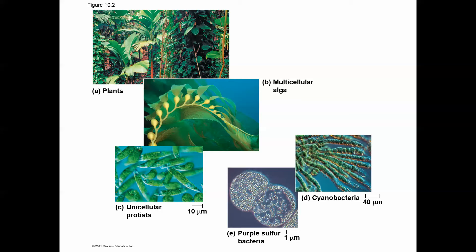The organisms involved in photosynthesis include plants, algae, and single-celled eukaryotes. But it also includes bacteria — some bacteria are also photosynthetic and able to undergo this process. So several eukaryotes do this: plants, algae, and single-celled eukaryotes, but some prokaryotic bacteria are photosynthetic as well.